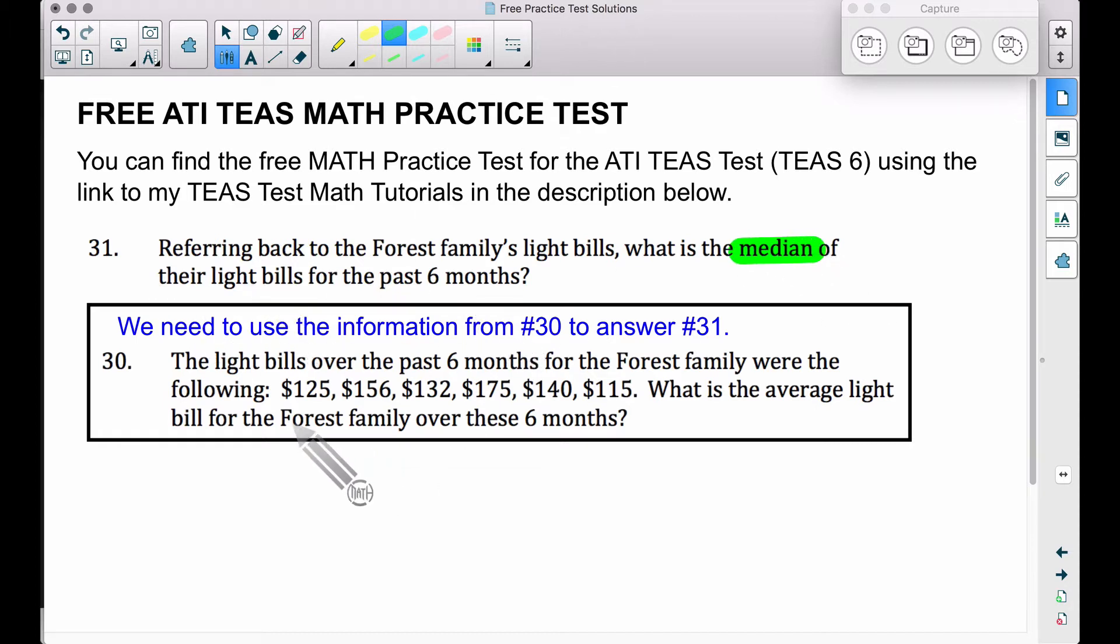These six numbers were their light bills from the past six months. To find the median, the median means the middle. And by middle, you can think of it as the middle number, but we need to put these numbers in either ascending order or descending order. I'm just going to list them from smallest to biggest, and there's our six numbers in ascending order, smallest to largest.